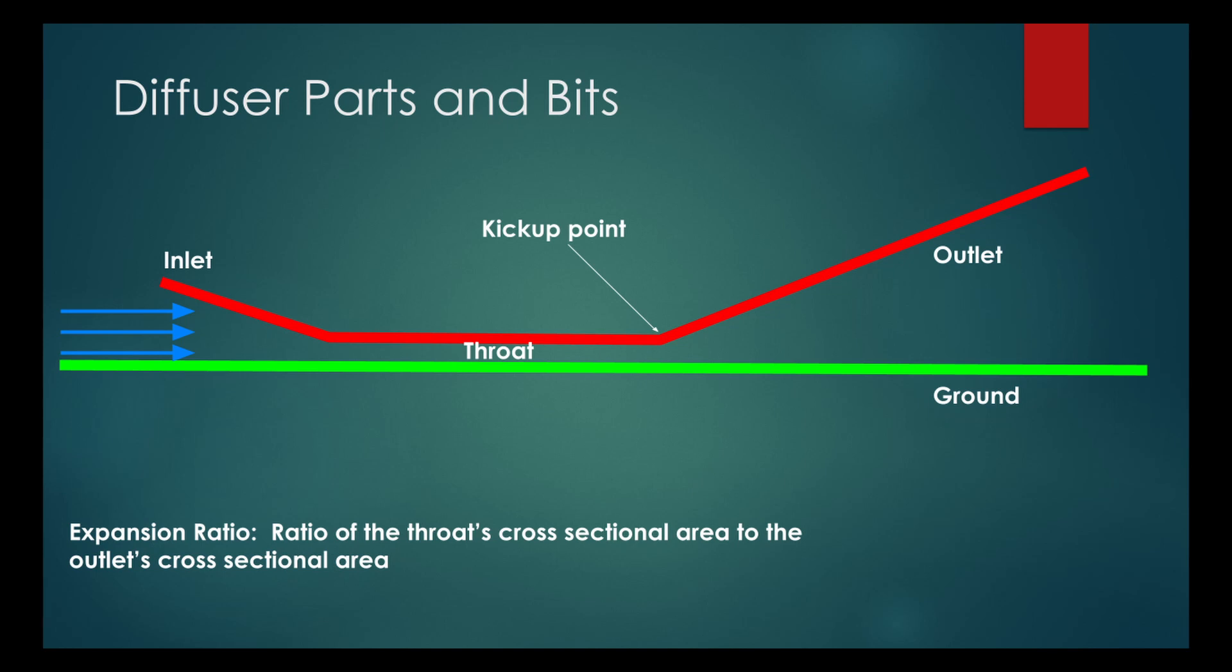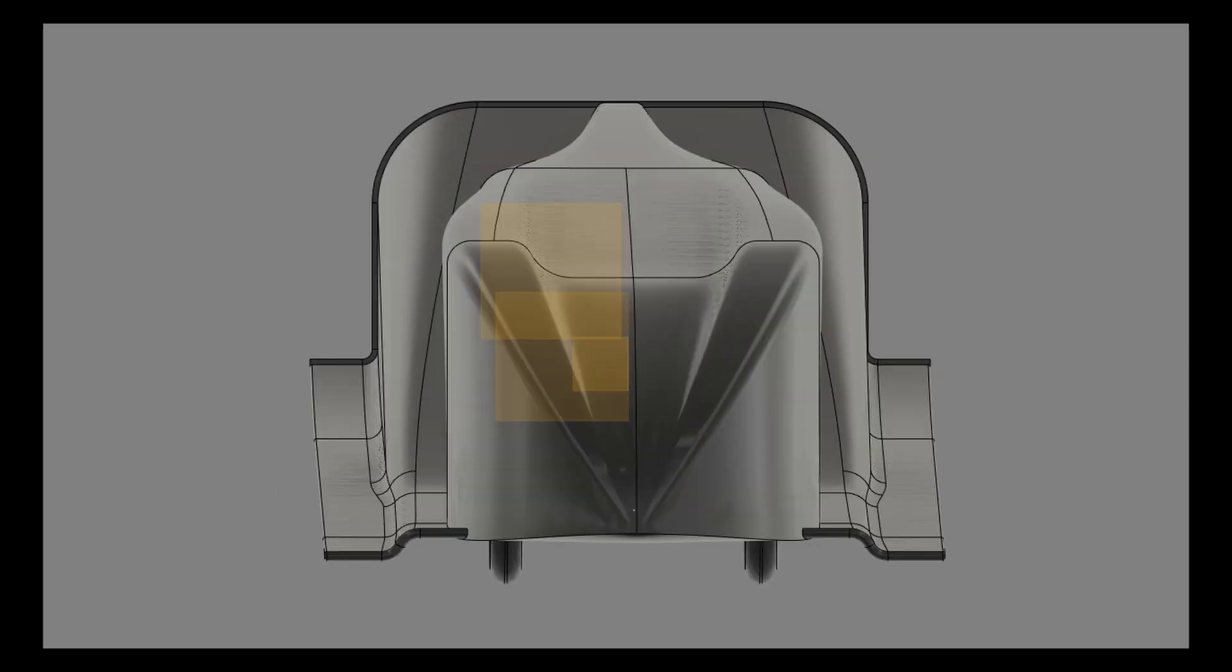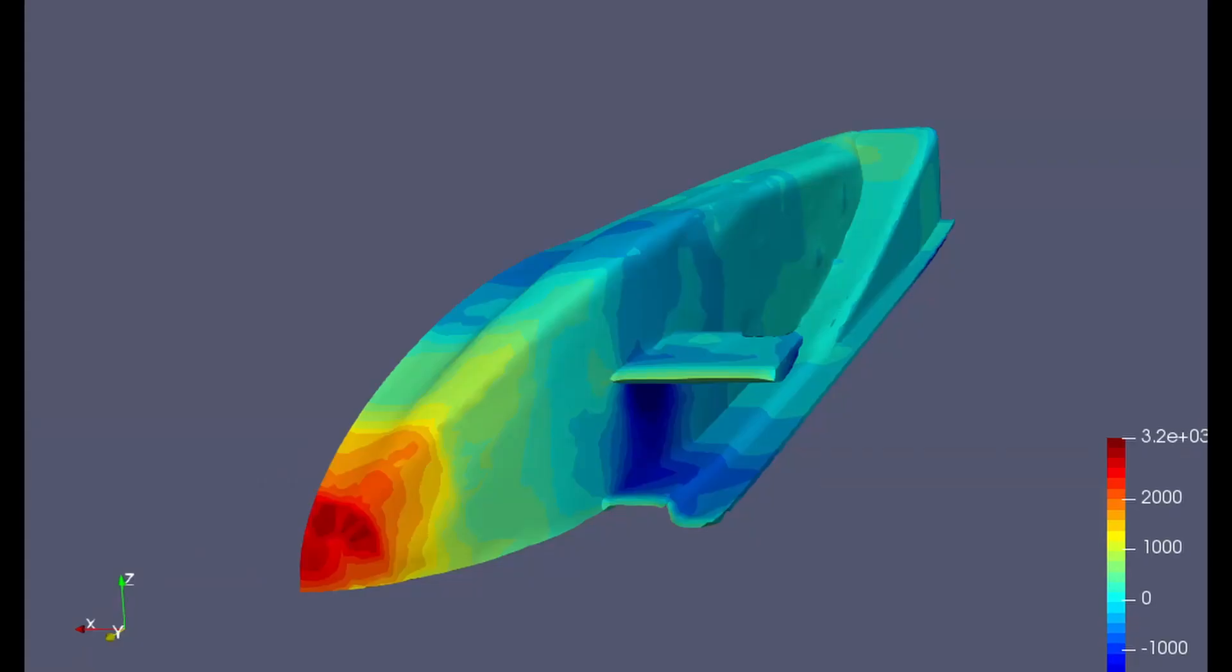So based on this, the first design I tried to use was just a square diffuser profile with a curved entry to try to feed more air into the diffuser, but it ended up having three times as much drag as the base model without the diffuser.